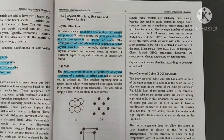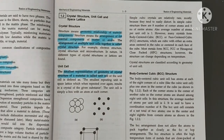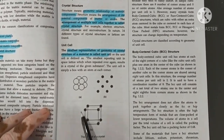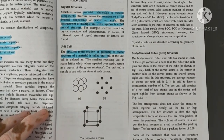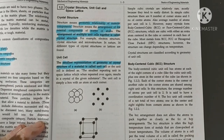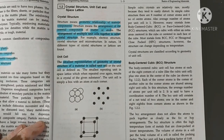Since cubes are formed, it is called cubic structure. Simple cubic crystals are relatively rare, mostly because they tend to easily distort. In a simple cubic structure there are eight corners — one, two, three, four, five, six, seven, eight — and zero center atoms. The average number of atoms per unit cell is one.